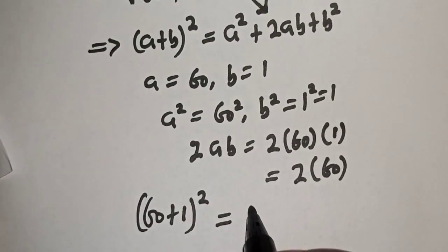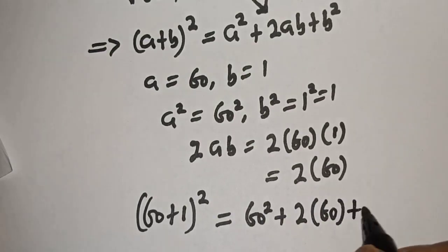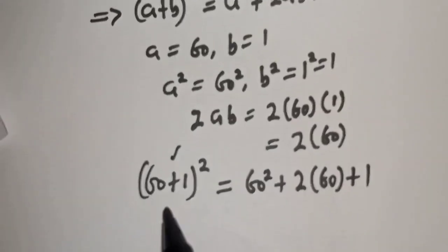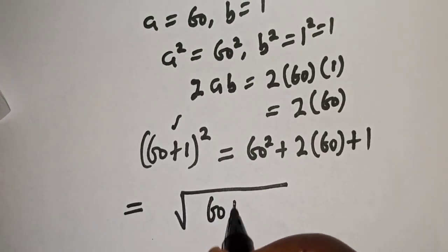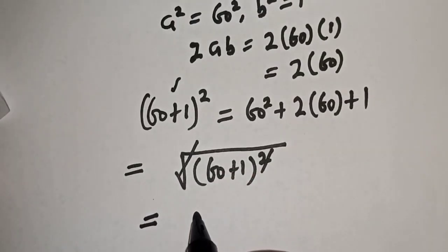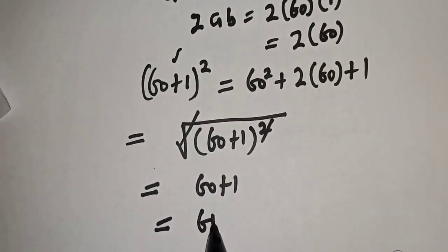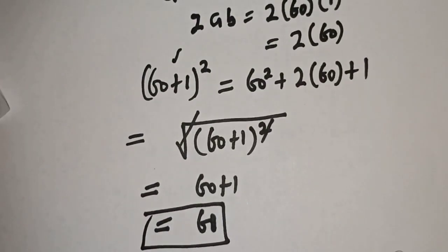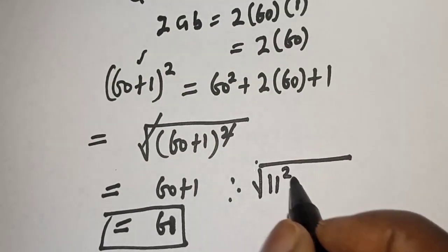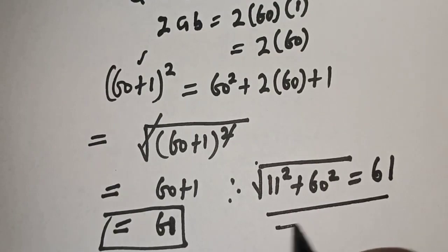This equals a squared plus 2ab plus b squared, that is 60 squared plus 2(60)(1) plus 1, which is (60 + 1) squared. Therefore the square root gives us 60 plus 1, which equals 61. The final answer is: the square root of 11 squared plus 60 squared is equal to 61. Thank you.